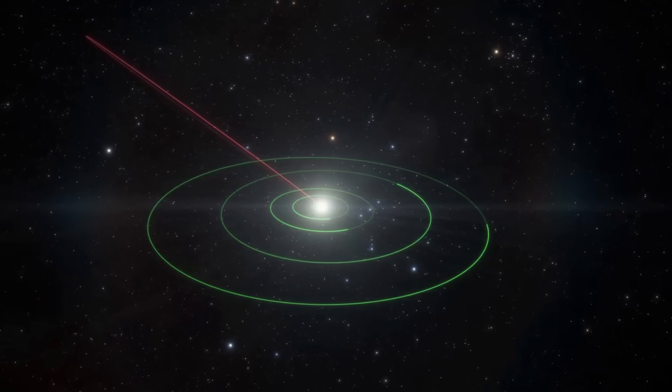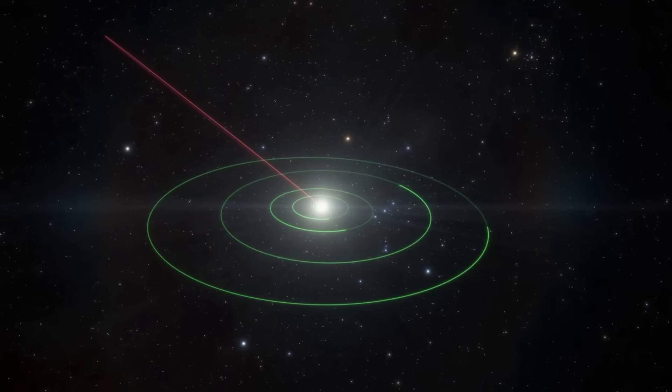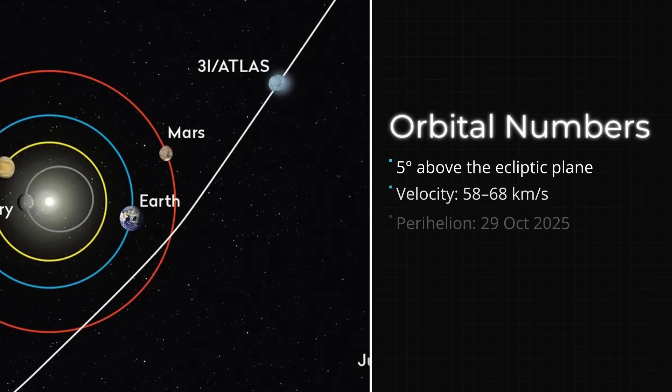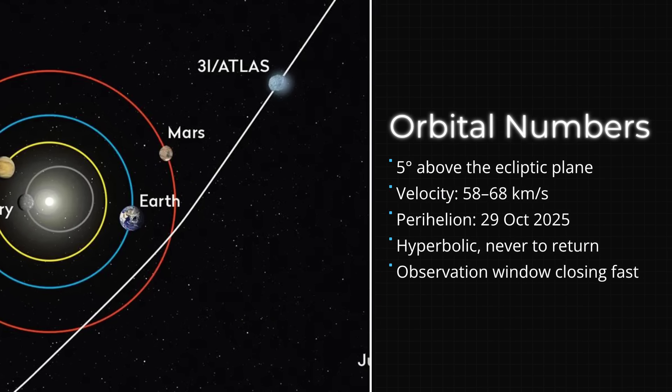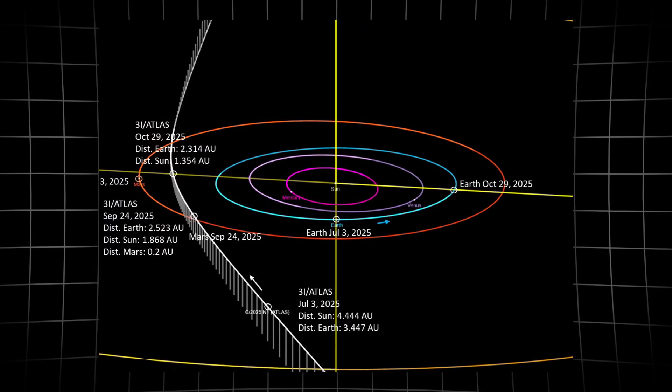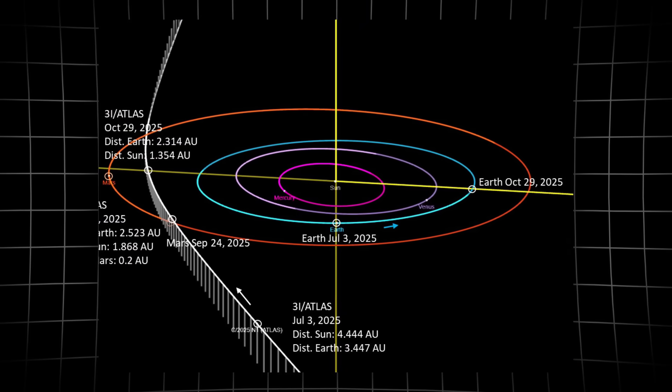This is the geometry of a cosmic interloper: inside Mars, five degrees off the ecliptic, racing from 58 to nearly 68 kilometers per second, with a date with the Sun set for October 29th. The numbers are precise, the timeline is fixed, and the window for direct observation is closing with every passing hour.